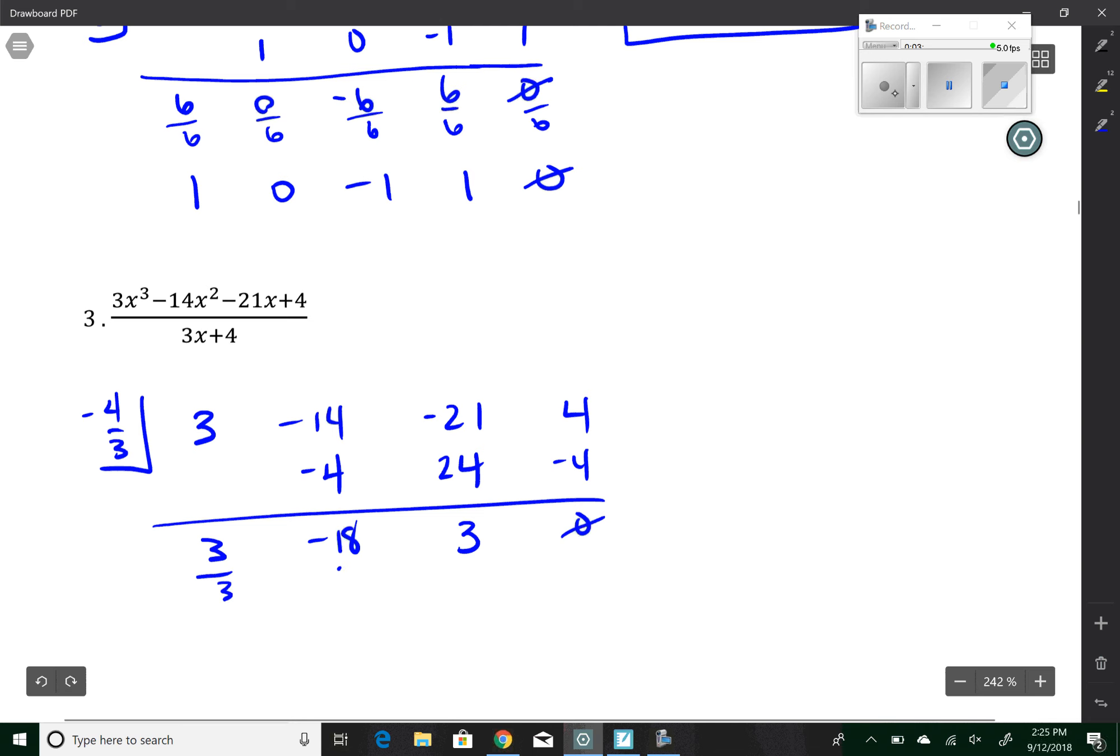Divide everything by the denominator. So I have 1, negative 6, 1, still a remainder of 0. So my final answer here is x squared minus 6x plus 1.